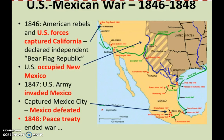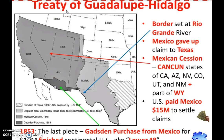Polk got his war — the U.S.-Mexican War, lasting from 1846 to 1848. In 1846, American rebels and U.S. forces captured California and temporarily declared it the Independent Bear Flag Republic, though it quickly came under American control. The U.S. then occupied New Mexico, and in 1847 actually invaded Mexico, landing at Veracruz and fighting to Mexico City. With the capture of their capital, Mexico was defeated, and in 1848 a peace treaty — the Treaty of Guadalupe Hidalgo — ended the war.